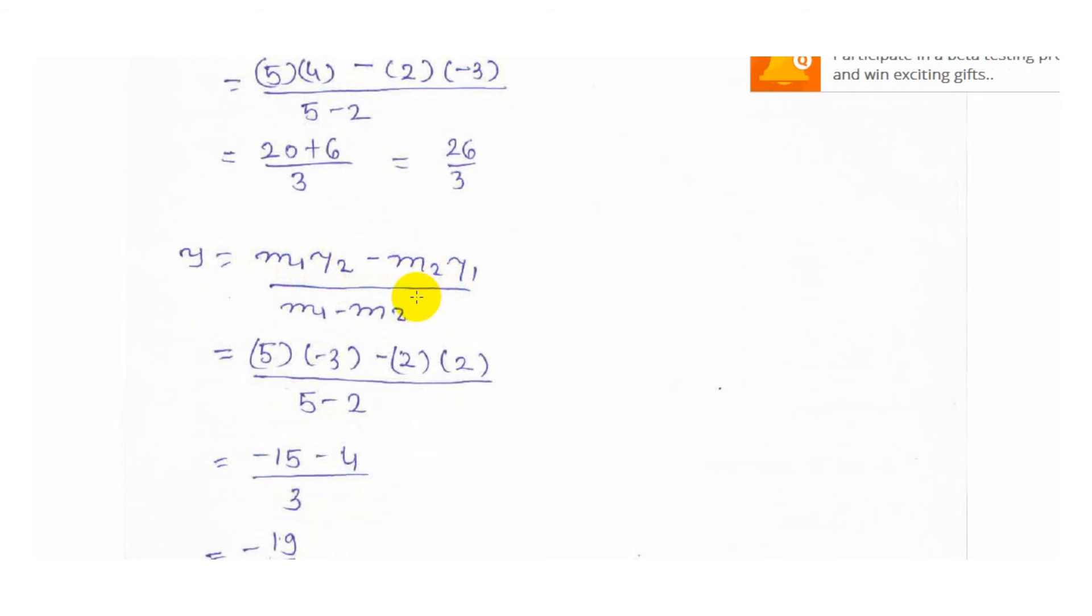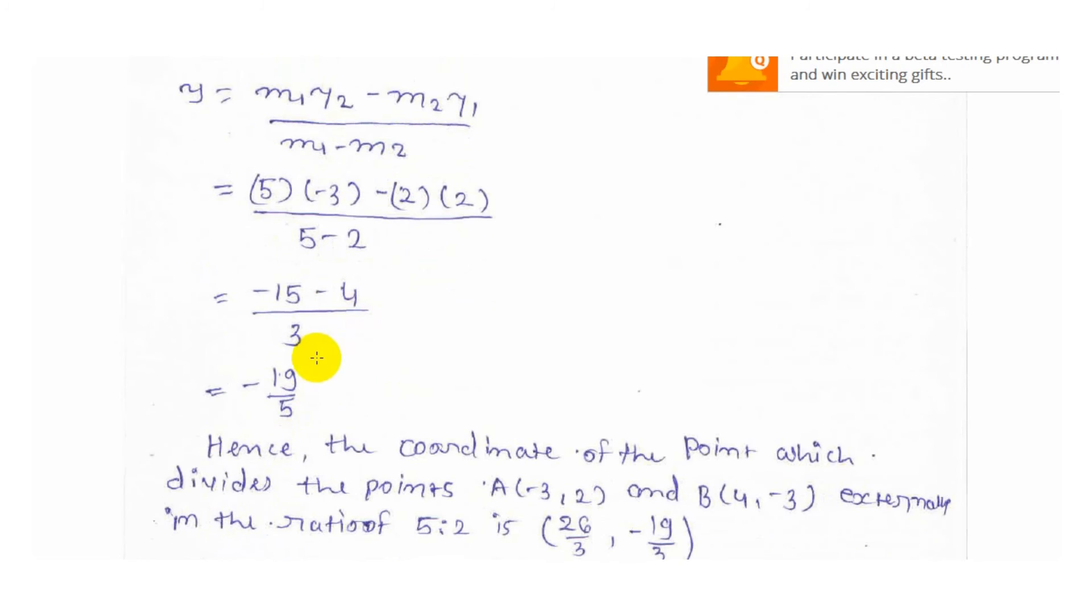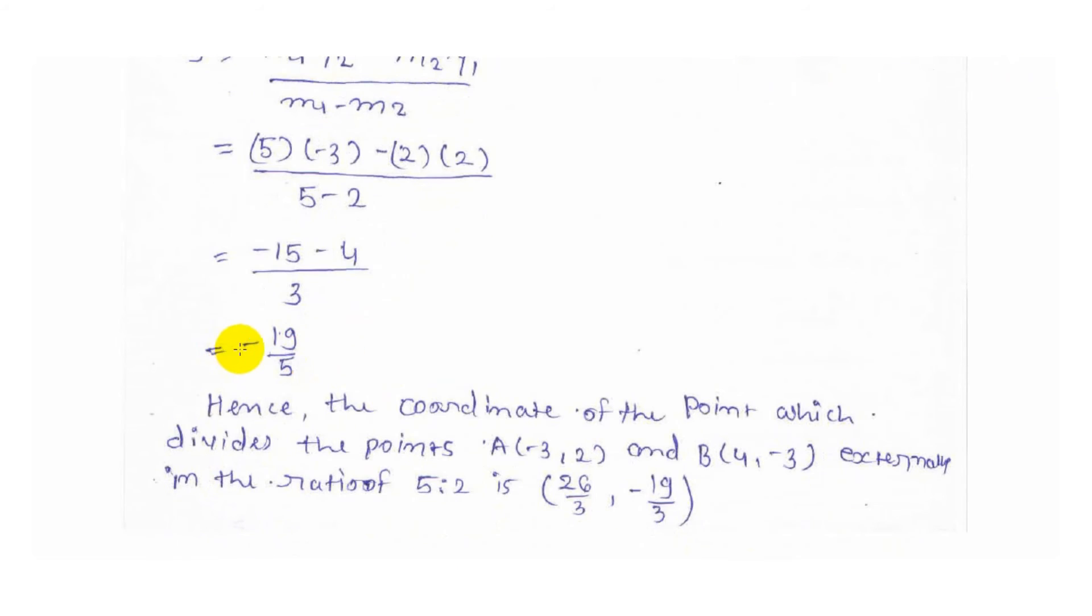Now put the value of m1·y2 and m2·y1. As a result we got -5 minus 4 upon 3. As a result, -19 upon 3.